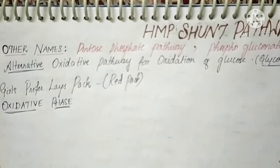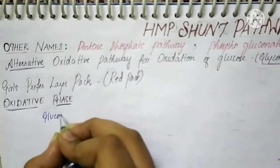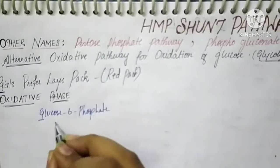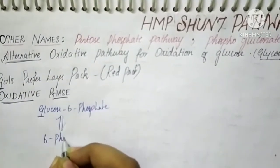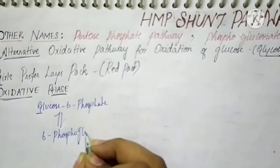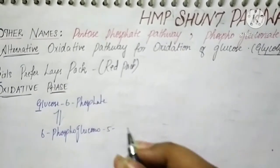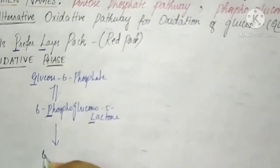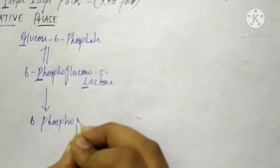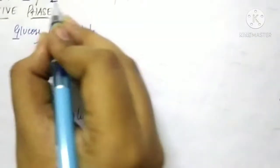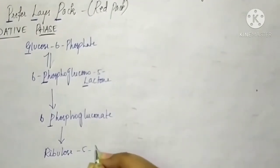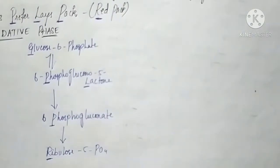Now let's see the oxidative phase. Glucose-6-phosphate — G for Girls. Then 6-phosphogluconolactone — P for Prefer, L for Lace. Then 6-phosphogluconate — P for Pack. And finally Ribulose-5-phosphate — R for Red. This completes the oxidative phase.